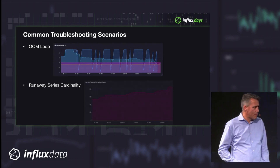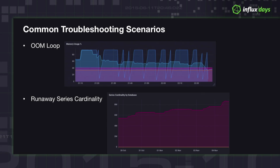Second: runaway series cardinality. Here's a customer that's gone from 6 million to 8 million series over four or five days — not really a problem. But if that same increase happened in four or five hours, which is what we normally see, that rapid increase means you've probably deployed something wrong. You may have put a new tag into a Telegraph input plugin that you didn't mean to, driving your series cardinality. This is a threshold you can watch — understand what's changed and what your expectation is in terms of data being ingested. Ryan mentioned additional tools to help inspect where this is coming from.